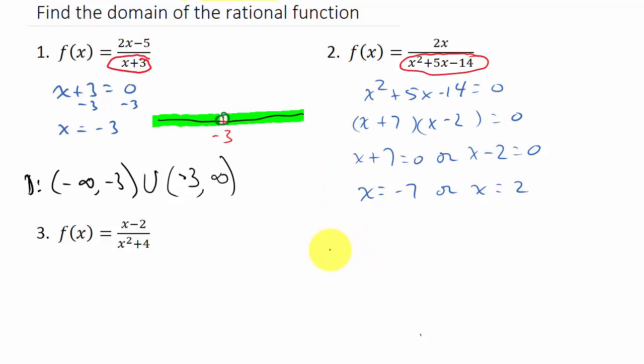Let's write it in interval notation again like we did the first one. Let's draw a number line and put negative 7 and 2 on there. You don't have to draw the number line; I'm just doing this because I think it might be easier for you to see how to write it in interval notation.